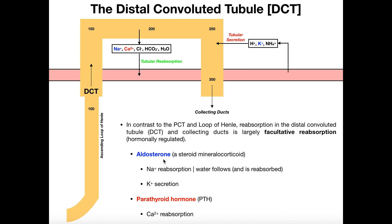We'll talk about aldosterone more when we discuss the RAS system, which is a hormonal system that regulates fluid volume. When aldosterone is released, it triggers sodium reabsorption from the distal convoluted tubule - sodium moves from the tubule into the peritubular capillary. Aldosterone also causes potassium to be secreted in the opposite direction - when there's excess potassium in the blood, aldosterone triggers its secretion from the blood into the tubule, to be eliminated in urine. So aldosterone causes sodium reabsorption and potassium secretion.